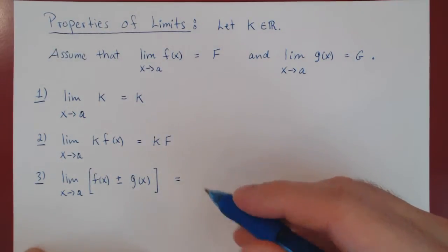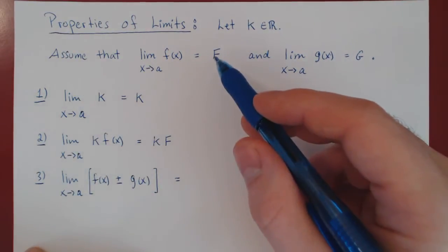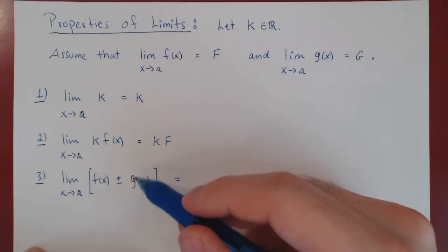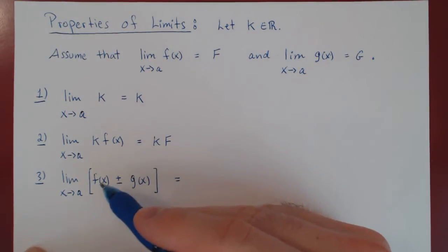Well again, this is very intuitive. As x is approaching a, f of x is getting closer and closer to F, and g of x is getting closer and closer to G. And so the sum will be approaching F plus G,